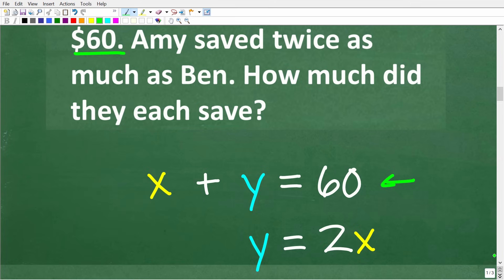But we do have another piece of information. Remember we need to build two equations. So Amy saved twice as much as Ben. Okay, so X is the amount that Ben saved. So 2 times X is twice the amount Ben saved and that is equal to Y, which is the amount that Amy saved. So here X plus Y is equal to 60, and Y is equal to 2X. This right here is our two variable linear system.